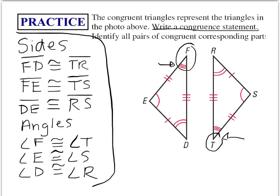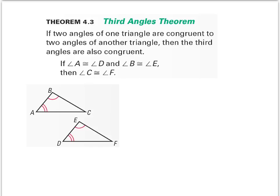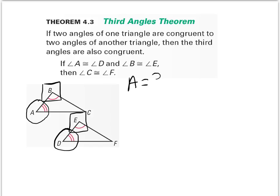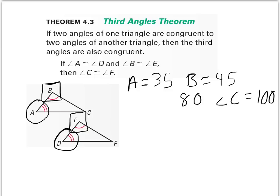That's our complete congruency statement. We'll do more practice — just be specific and we should be good. The Third Angles Theorem tells us that if two angles of one triangle are congruent to two angles of another triangle, then the third angles are also congruent. Here, angle A is congruent to angle D, and angle B is congruent to angle E.